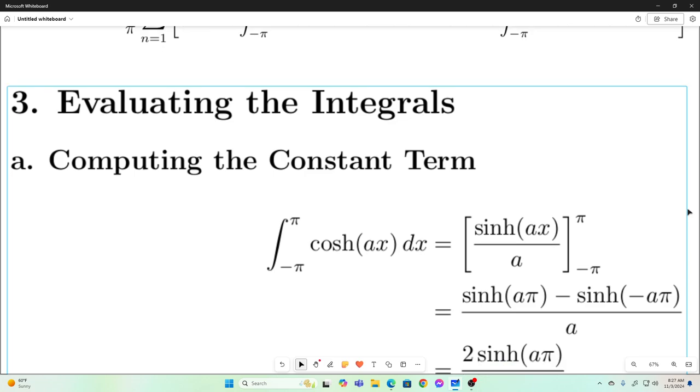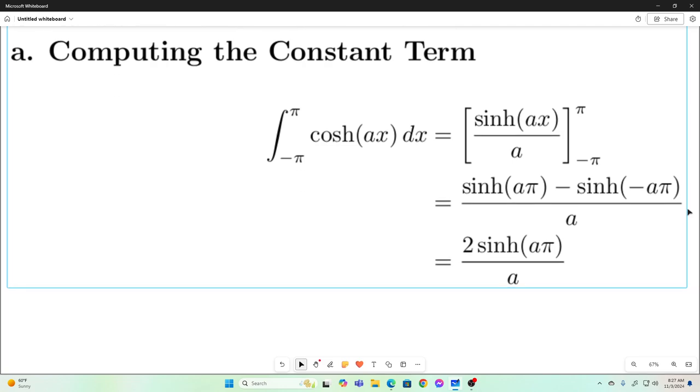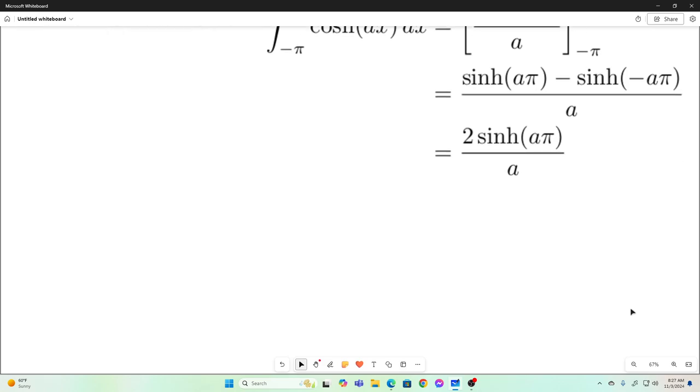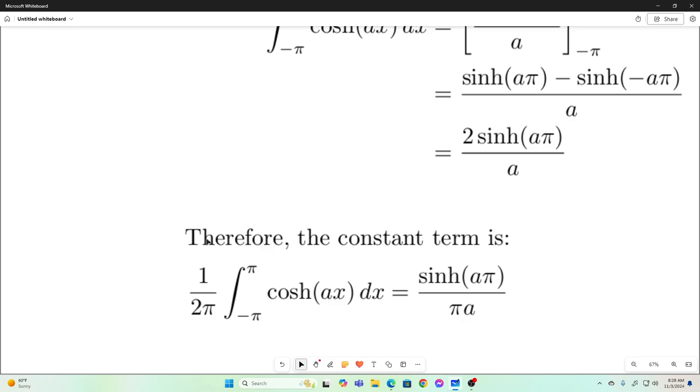So let's compute our first integral there. That's very standard stuff. That's just going to equal two times the hyperbolic sine of a pi. If you just evaluate that, take the antiderivative and evaluate it at the bounds, and this is what you get. So multiplying that by 1 over 2 pi just gives us this.